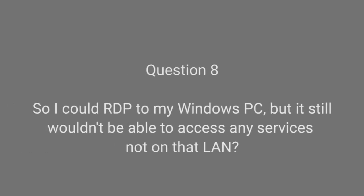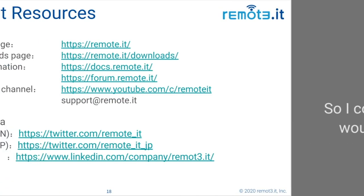So I could RDP to my Windows PC, but it still wouldn't be able to access any services not on that LAN. Yes, that's correct — you'd get to your Windows PC, and your PC would then have access to anything else on the LAN just as it normally would. If your PC is on the LAN, it has access to other devices on the LAN based on the permissions and settings — nothing changes relative to that.